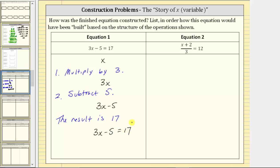Let's look at the second equation. We have the quantity (x + 2) / 3 = 12. Again, we start with the variable x. And because we have x + 2, step one is to add 2. If we add 2 to x, this gives us the expression x + 2.